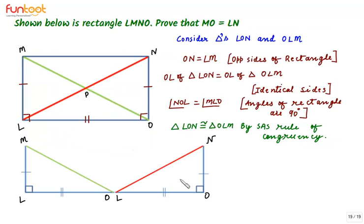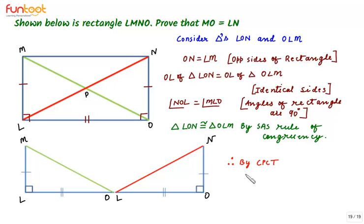Therefore, triangle LON is congruent to triangle OLM by the SAS rule of congruency. We have shown the two triangles separately so we can see this clearly. Therefore, by CPCT, MO is equal to LN, which are the diagonals of the rectangle, and we have proved them to be equal.